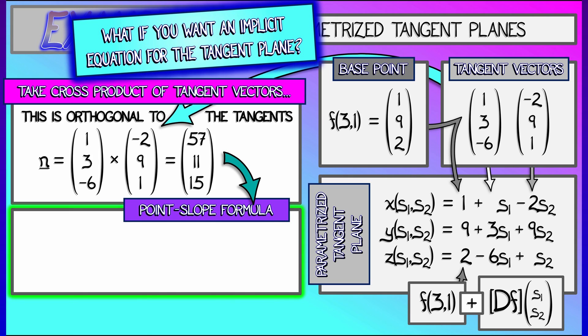And plugging that into the point-slope formula gives me an equation. 57 times quantity x minus 1 plus 11 times quantity y minus 9 plus 15 times quantity z minus 2 equals 0. Simplify that out. You get 57x plus 11y plus 15z equals 186.